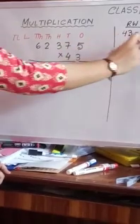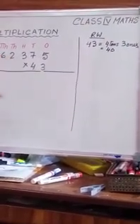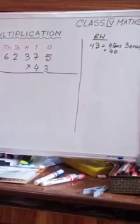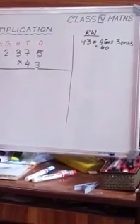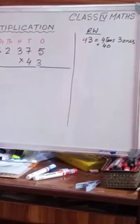We are going to multiply this number by three ones and write the answer. Next, we are going to again multiply 62375 by four tens — remember children, not by 4 but by four tens, that is 40. So we have to multiply this number two times and then add the two numbers to obtain our final result.